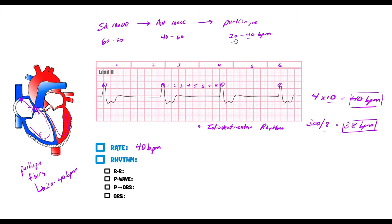40 beats per minute falls right in the range of the Purkinje system or idioventricular rhythm. Now let's determine the rhythm. The R-to-R interval: counting one through eight boxes between each complex — they're all about eight boxes, consistent across the strip. So the rhythm is regular.